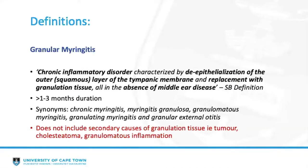Granular myringitis specifically is defined by Scott-Brown as a chronic inflammatory disorder characterized by de-epithelialization of the outer squamous layer of the tympanic membrane and replacement with granulation tissue, all in the absence of middle ear disease. The majority of definitions agree, requiring the exclusion of middle ear disease or inflammation, and it is a chronic condition requiring symptoms to be present for more than one to three months.